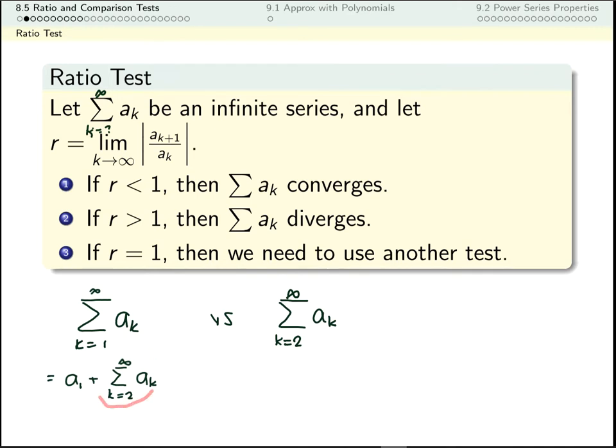So if this infinite bit converges, it goes to some finite number, then this goes to some finite number as well. If this infinite bit diverges, then it doesn't matter that I'm adding some finite number to it, this diverges as well.